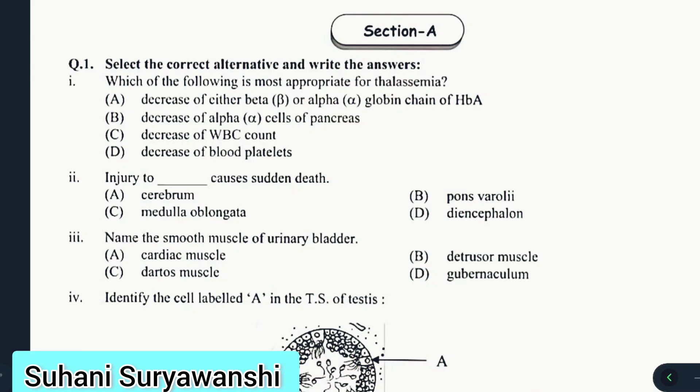There are 10 MCQs in Section A. Question 1: Which of the following is most appropriate for thalassemia? Options include decrease of either beta or alpha globin chain of HbA, decrease of alpha cells of pancreas, decrease of WBC count, decrease of blood platelets. The correct answer is decrease of either beta or alpha globin chains of HbA.